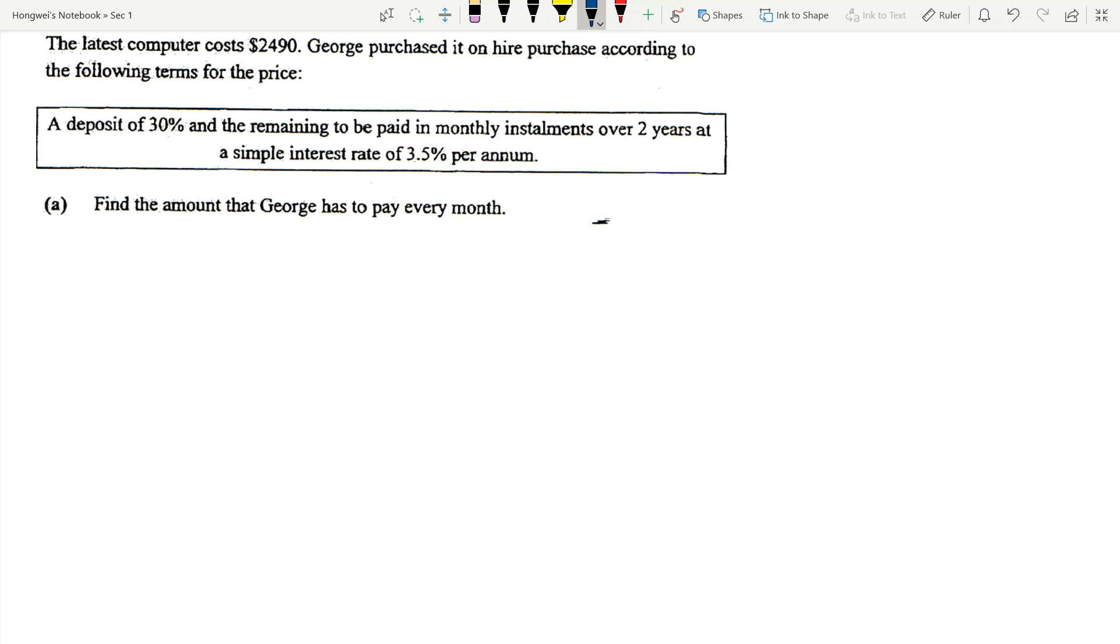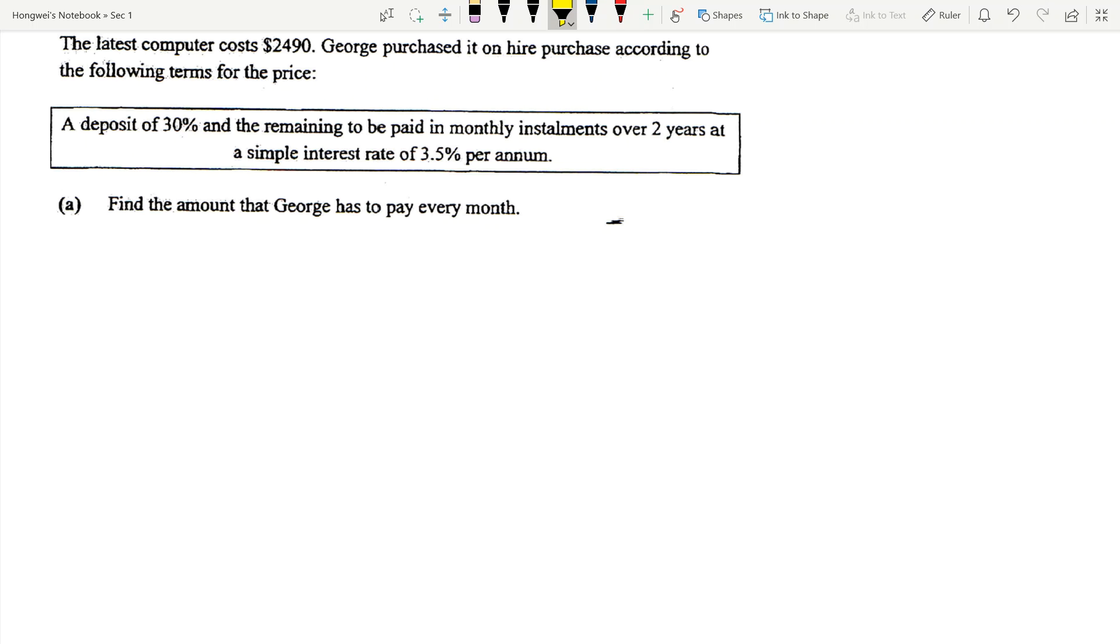For example, this computer that costs $2,490. We usually do not have the money to pay $2,490. We need to buy this computer, so we can buy it on a hire purchase scheme.